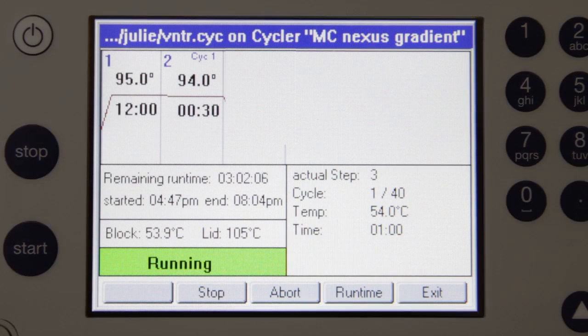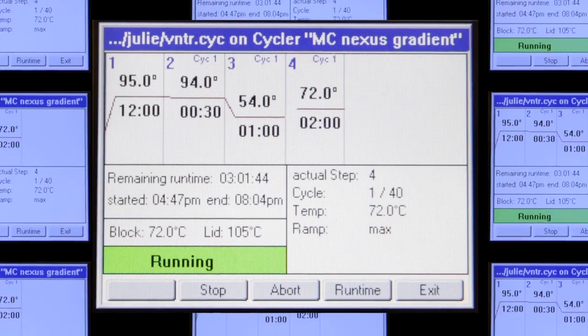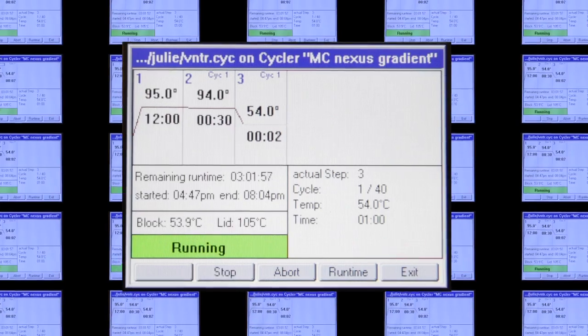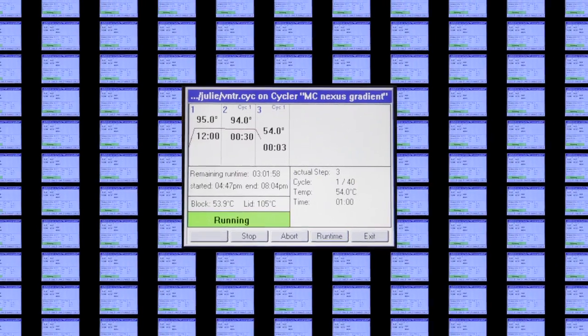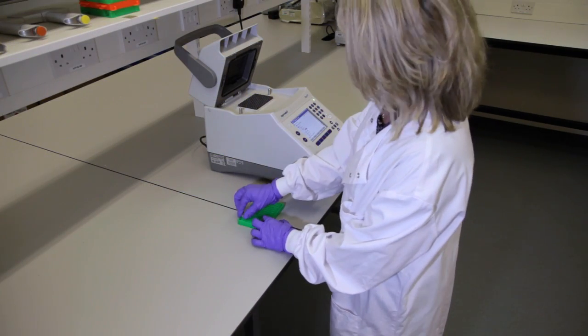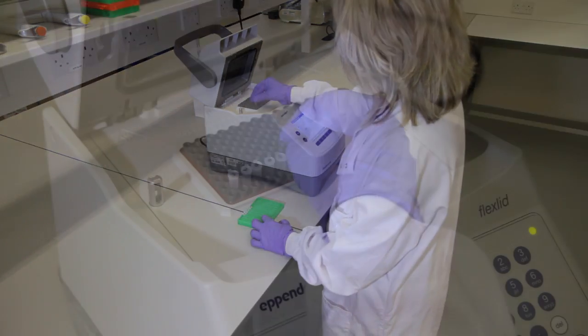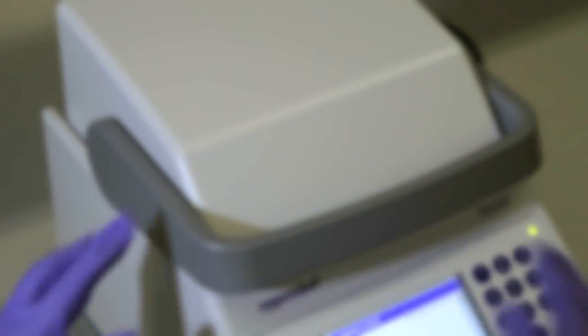This process of denaturing, annealing and extension is repeated 30 to 40 times, theoretically doubling the number of DNA copies at each cycle, and thereby increasing exponentially the number of copies of your target of interest in the mixture. Samples can be prepared and incubated in a thermal cycler, and a complete PCR reaction can be performed in a few hours, or even less than an hour with certain types of rapid instrument.